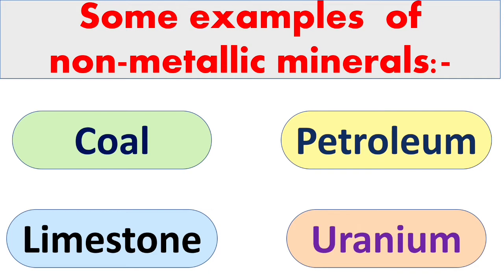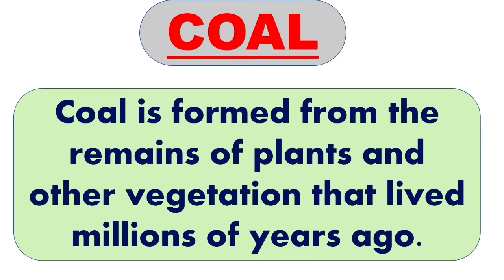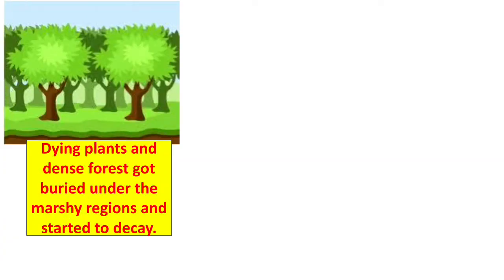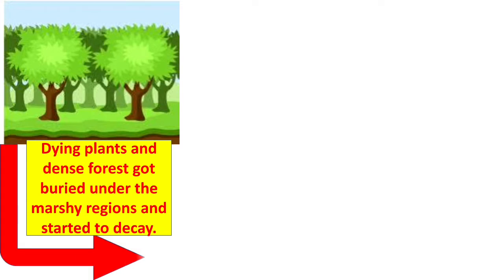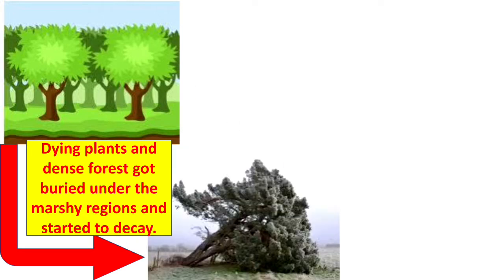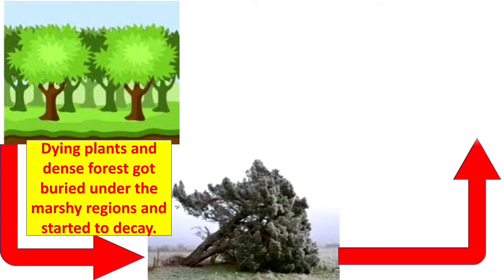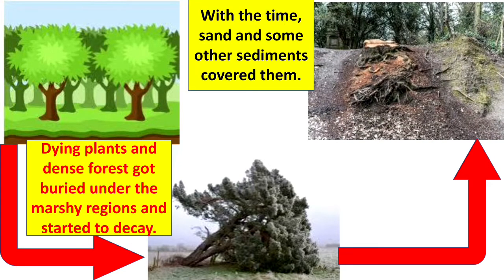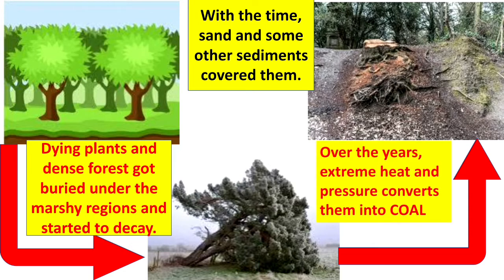Coal and petroleum are valuable non-metallic minerals. These are dug out of the earth from deep underground mines and wells. Coal is formed from the remains of plants and other vegetation that lived millions of years ago. Long ago, the earth was covered with swampy forests. Dead plants and dense forests got buried under marshy regions and started to decay.